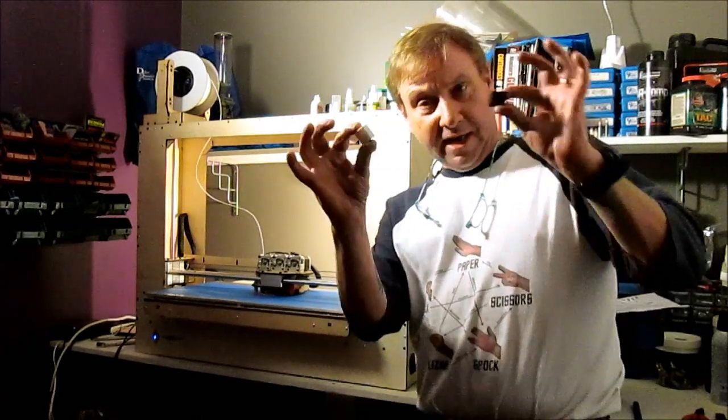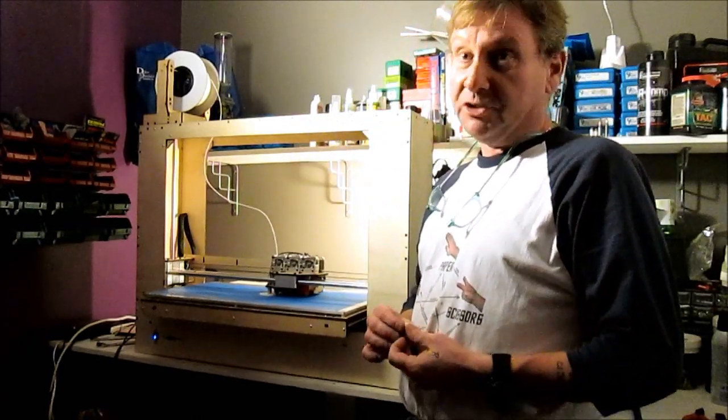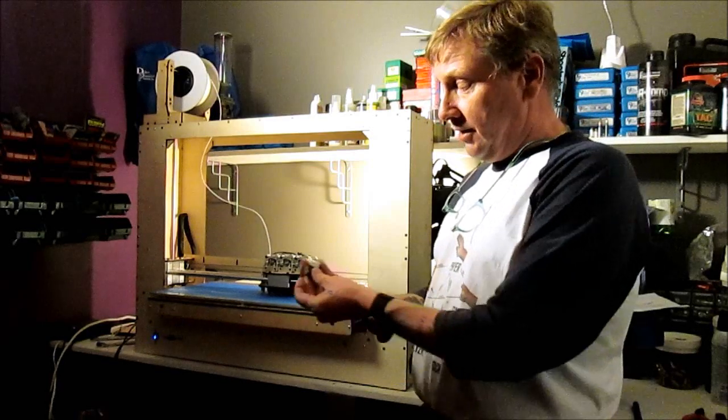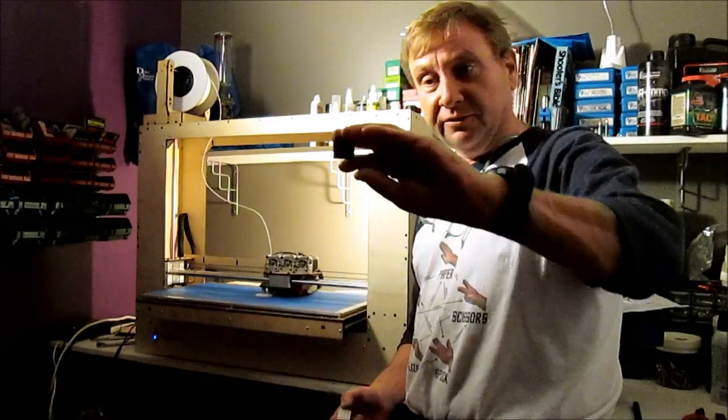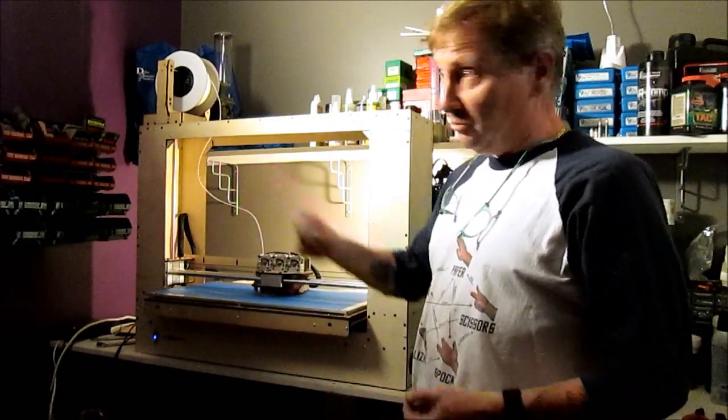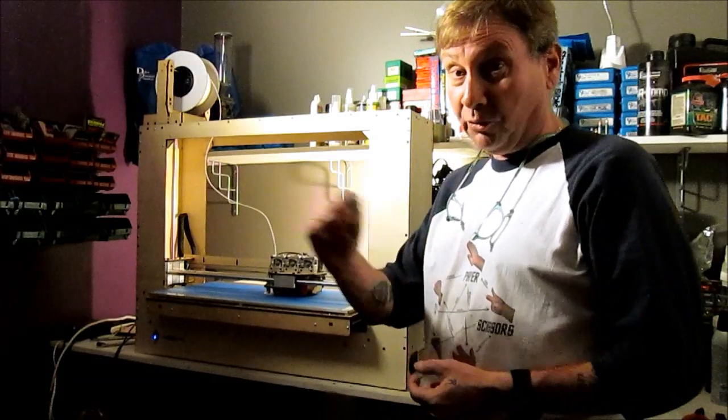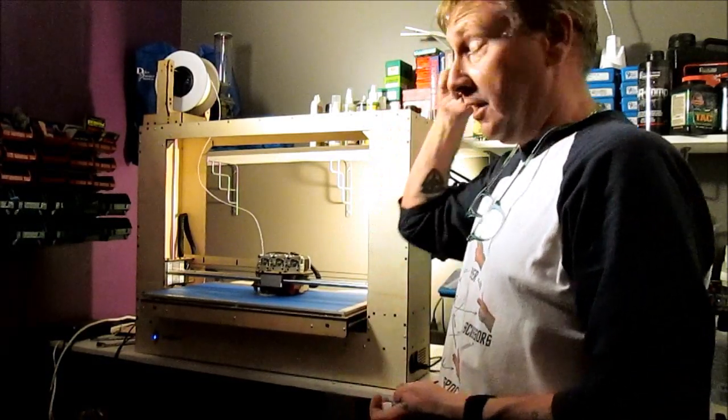Also, I printed some of the calibration cubes. The G-code comes on the SD card they sent me. That's some of the stuff they sent me, the freebie. And I put in some good Zen Toolworks white that I know prints really good, especially in my replicator.